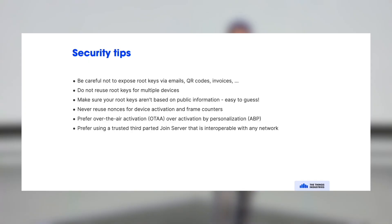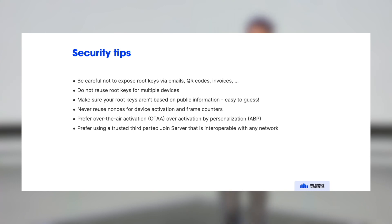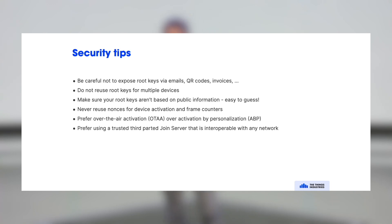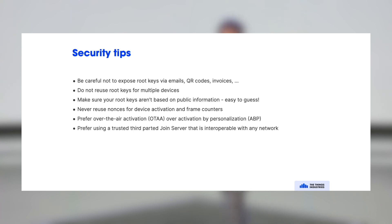Security tips: don't share your root keys — use a join server. Use a unique root key for each end device; don't reuse the same root key, and make sure it's generated by a random number generator, not derived from a serial number. Never reuse nonces or frame counters, which requires persistent memory in the end device and a compliant network server. Choose Over-the-Air Activation unless you have a very good reason not to. Finally, use a trusted third-party join server that doesn't lock you into one ecosystem but allows you to activate on any LoRaWAN network.